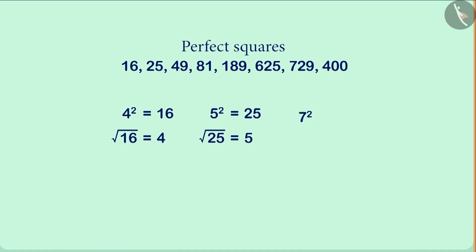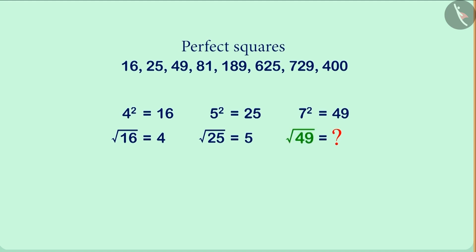So tell me, if the square of 7 is 49, then what will be the square root of 49? Absolutely right! The square root of 49 will be 7.